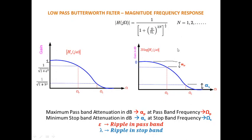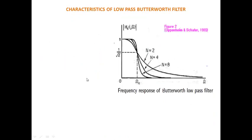The magnitude frequency response H_A(jω) is given by 1 divided by the square root of [1 + (ω/ω_c)^(2n)], where n is the order of the filter and ω_c is the cutoff frequency. This is the fundamental frequency response equation for the Butterworth filter.